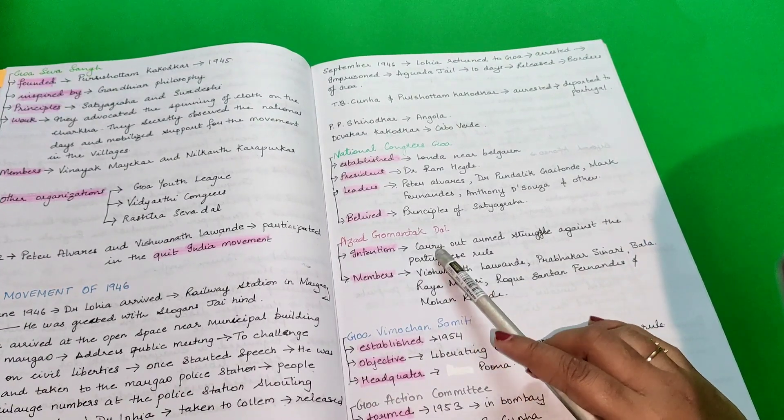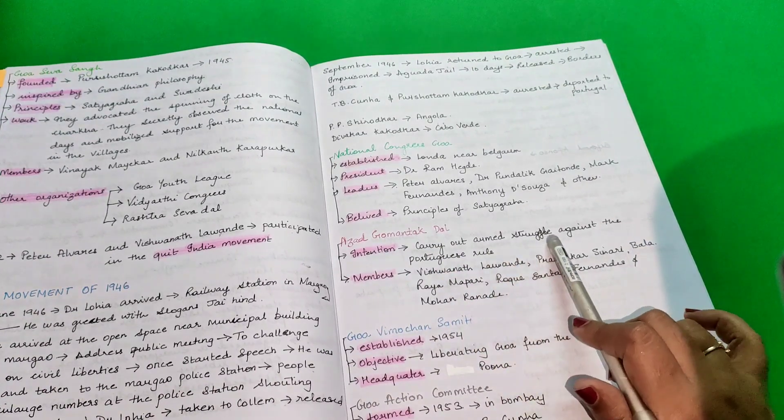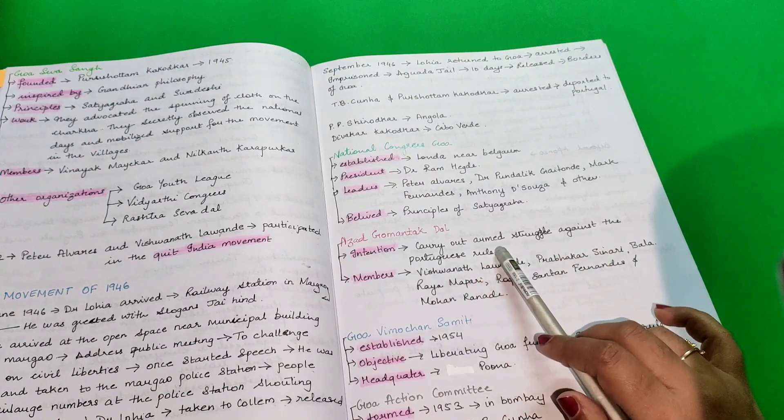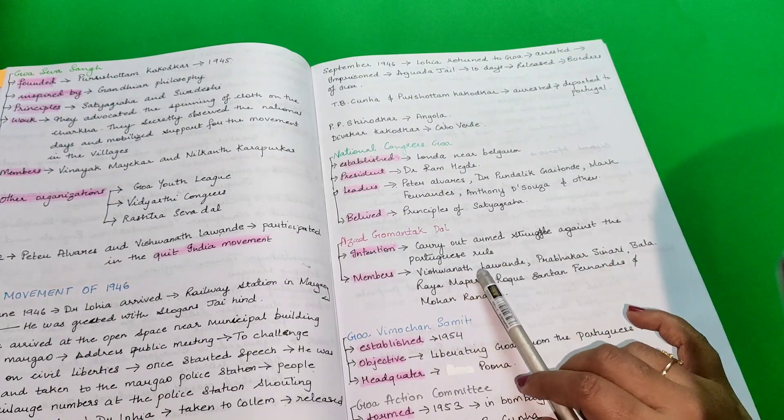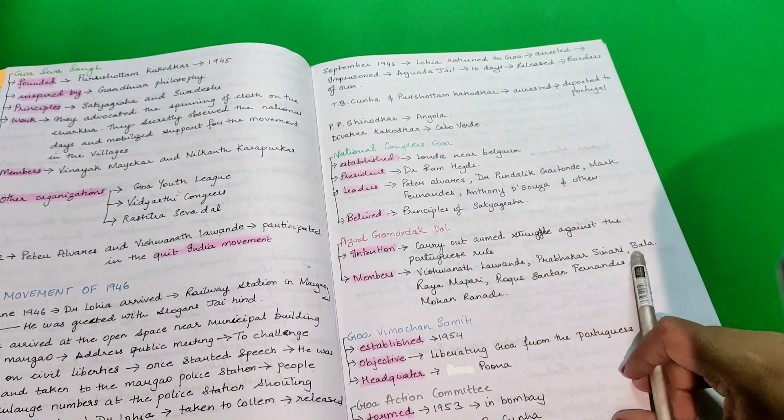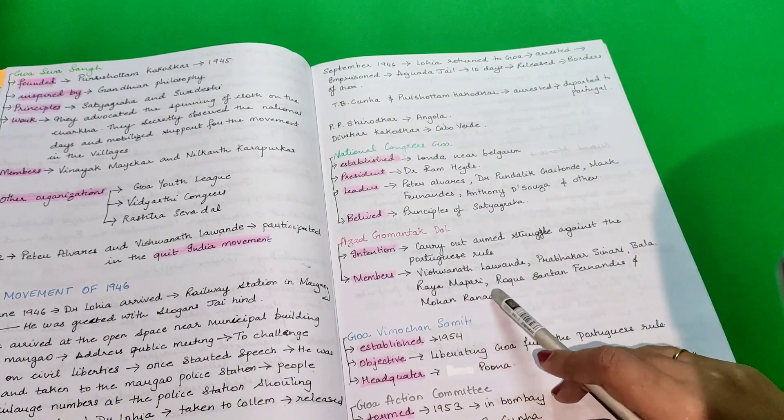Azad Gomantak Dal. Their intention was to carry out armed struggle against the Portuguese rule. Members were Vishwanath Lavande, Prabhakar Sinari, Balaram Apari, Roque Santana Fernandes and Mohan Ranade.